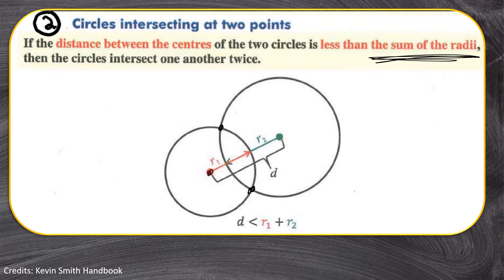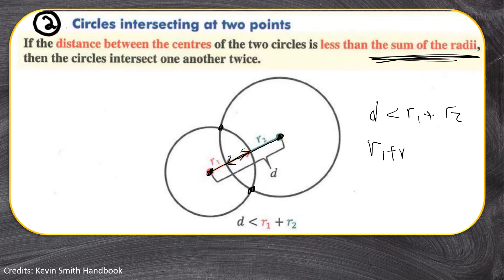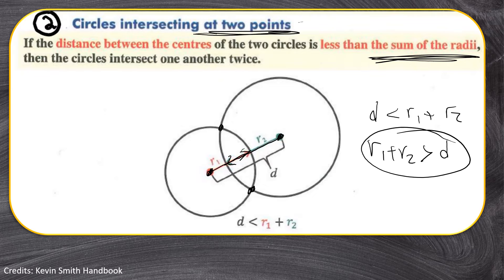Look at this: when you calculate the distance between the centers, you get a value d. But if you take r1 and add r2, the total will be greater than d. In other words, d will be less than r1 plus r2, or rather r1 plus r2 will be greater than d. This implies that the circles are intersecting each other at two points.